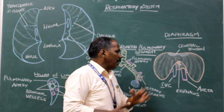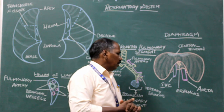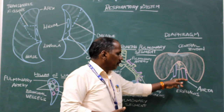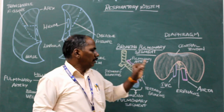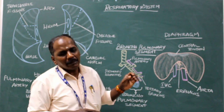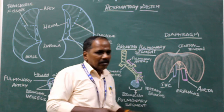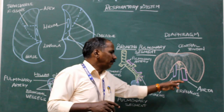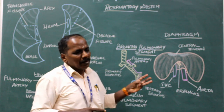Openings of the diaphragm: There are three major openings. One for the inferior vena cava, one for the esophagus, and one for the aorta. The opening for the inferior vena cava is at the level of T8. The opening for the esophagus is at the level of T10. The opening for the aorta is at the level of T12.